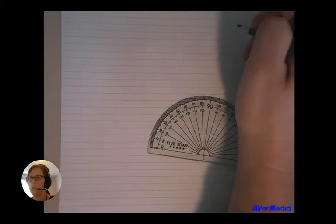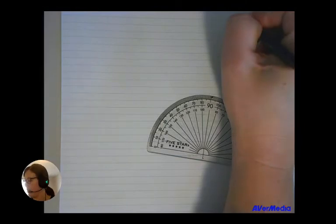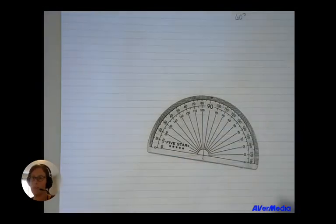And as you remember, an acute angle is anything between 1 and 89 degrees, because once we hit 90 we're at a right angle. So I'm going to model how to draw 60 degrees.